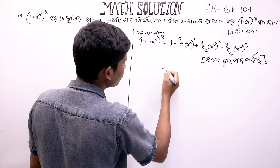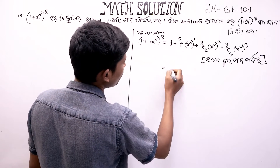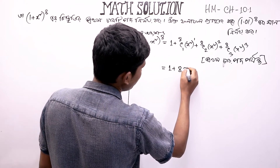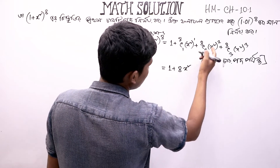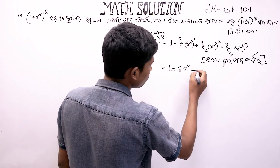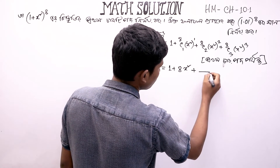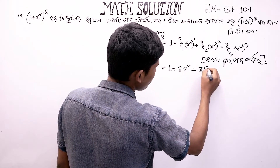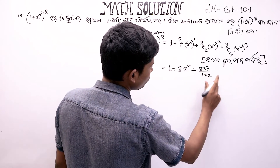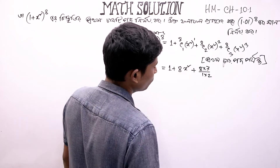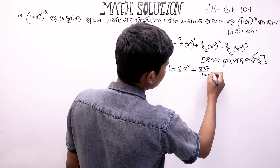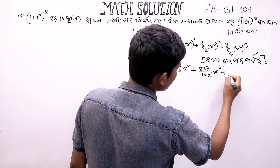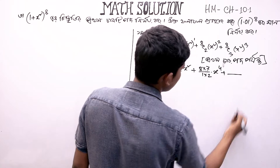So, we have completed this. So we have 1, 8C1 meaning 8 into x squared, and then we have 8C2, so we have 1 into 2, 8 into 7. So we have 1 to the power of x to the power of 4. Plus 8C3.